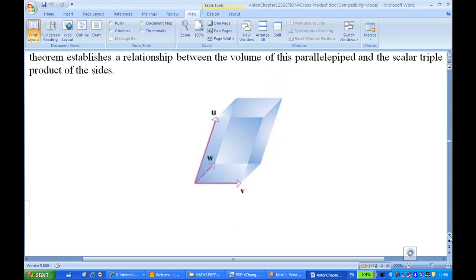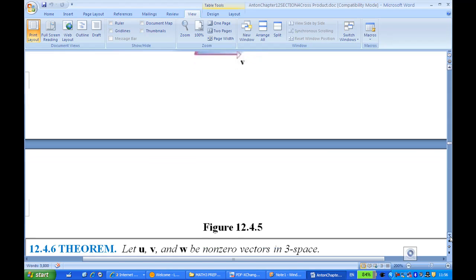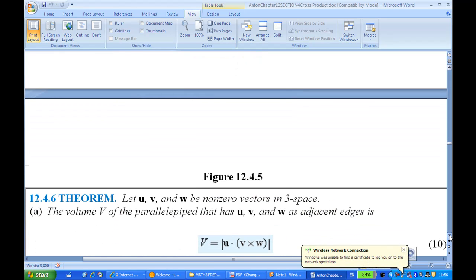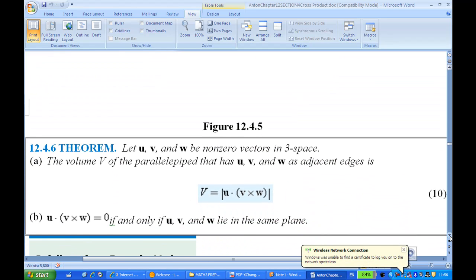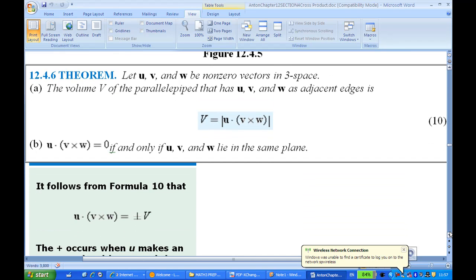The volume of the parallelepiped is actually the scalar triple product, which is u dot (v cross w). This is theorem 12.4.6: the volume of the parallelepiped is the absolute value of u dot (v cross w).